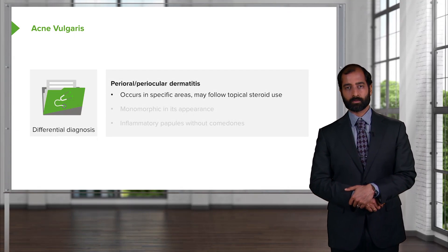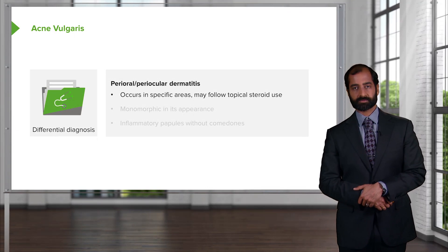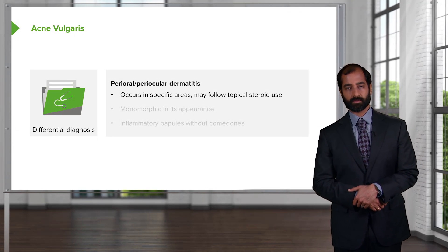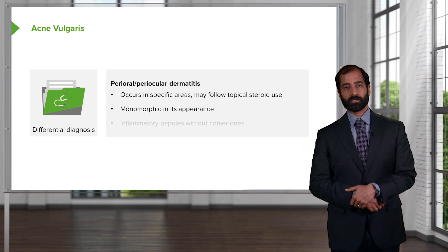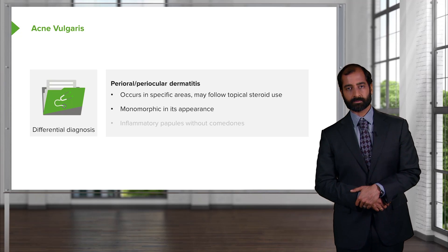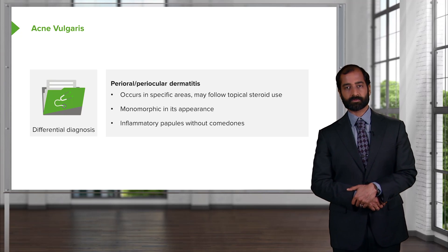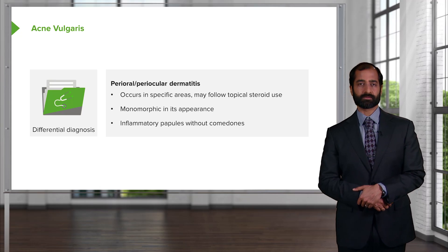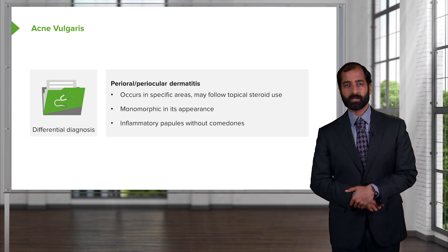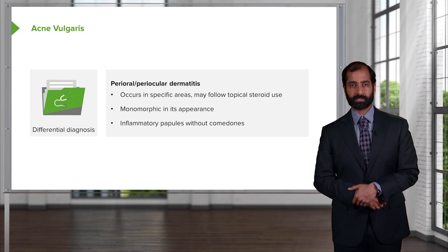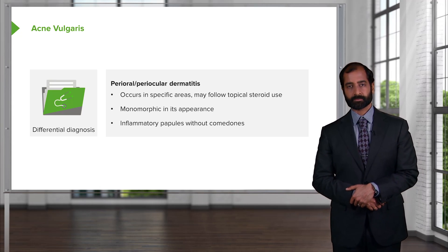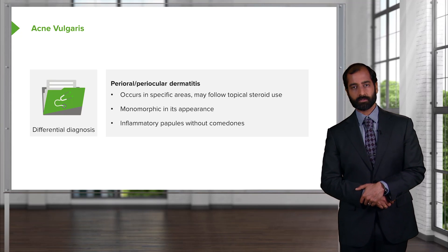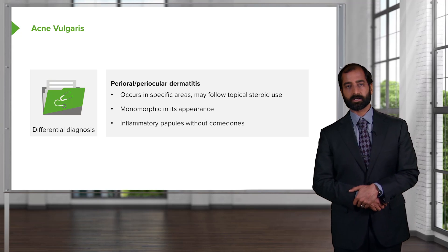Another differential is perioral or periocular dermatitis. These occur in specific areas and may follow topical steroid use. They appear monomorphic with inflammatory papules but without comedones. Once again, comedones — either blackhead or whitehead — point more toward acne vulgaris in the teenage population with adrenarche-related issues.